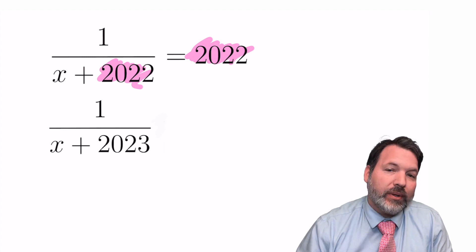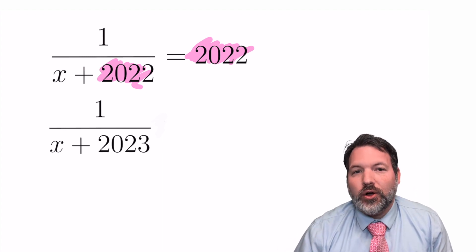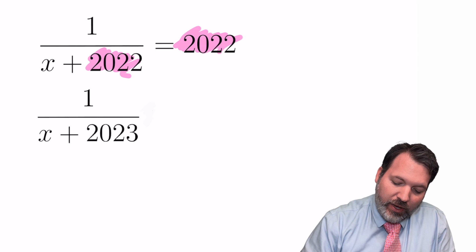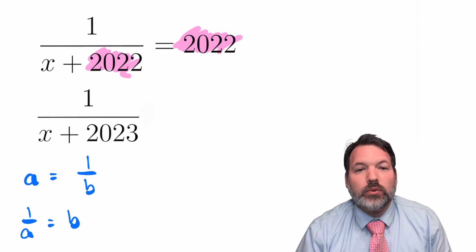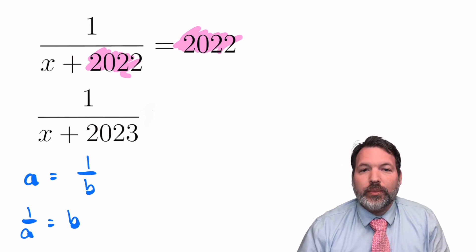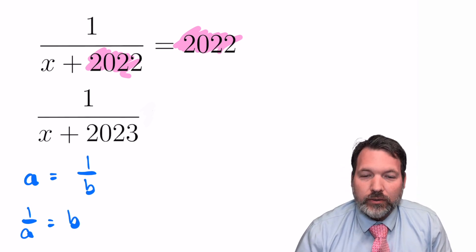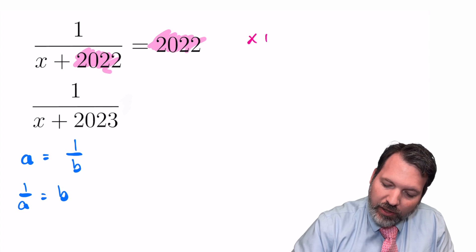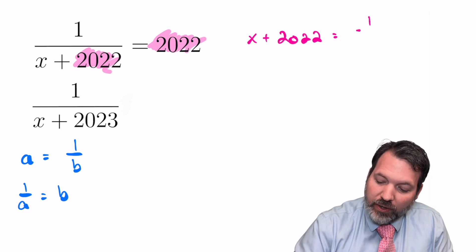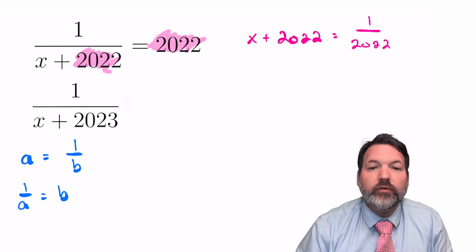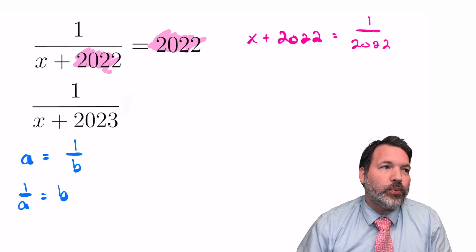What we're going to use for this is called the reciprocal identity. If we have some a equal to 1 over b, then 1 over a also equals b, provided neither a nor b are 0, which is the case here. What that means for us is that we can actually flip this first equation around and say that x plus 2022 is the same thing as 1 over 2022.